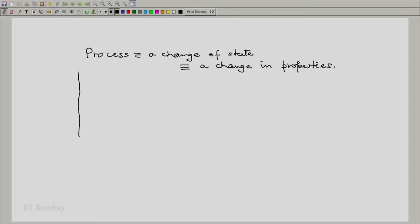Now one should realize that when a process takes place, the state changes, say from 1 to 2, so at least one property will change from 1 to 2.